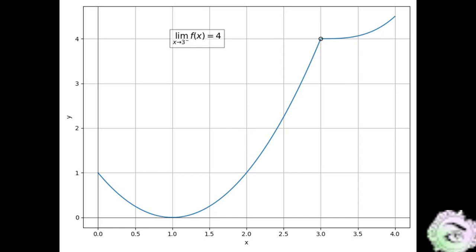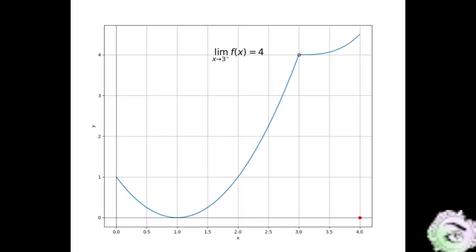Now let's focus on the right limit. To find the right limit at 3, we have to approach 3 from the right side. Let's start from the furthest point under the graph on the right side, which is marked by the red dot. To find the point on the graph corresponding to the x-coordinate in red, let's draw a vertical line from the red point to the graph, shown by the blue dot. To find the corresponding y-coordinate, let's draw a horizontal line from the blue point to the y-axis, marking the point with a green dot. The red dot shows the input x-coordinate and the green dot shows the corresponding y-coordinate.